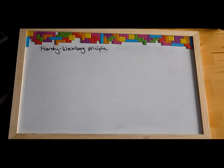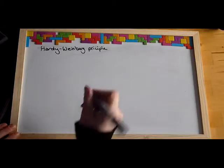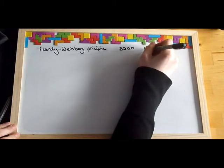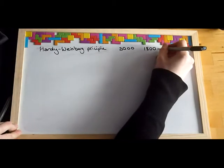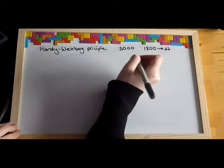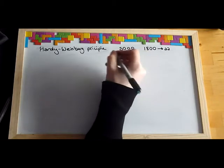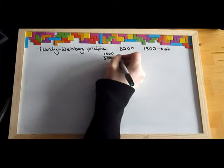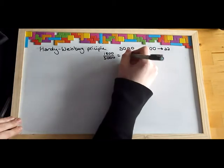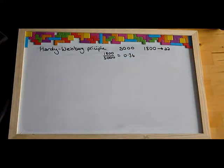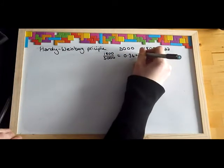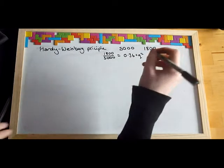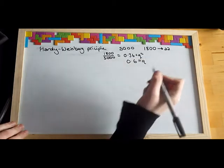An example for the Hardy-Weinberg Principle: in a population of 5000 birds, 1800 have the recessive phenotype — so that's aa. Because you have to work with decimals, not numbers, 1800 divided by 5000 equals 0.36. If the question asks you to calculate the frequency of the dominant allele, 0.36 is equal to Q squared because it's the recessive phenotype. So Q equals 0.6, since the square root of 0.36 is 0.6.